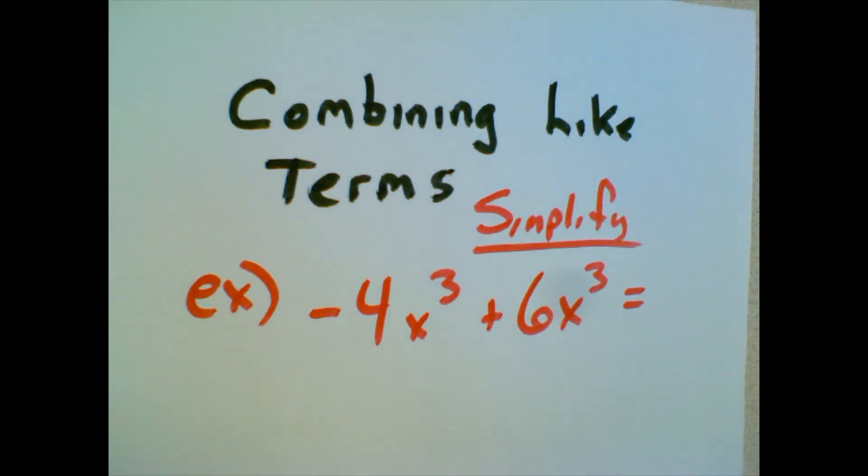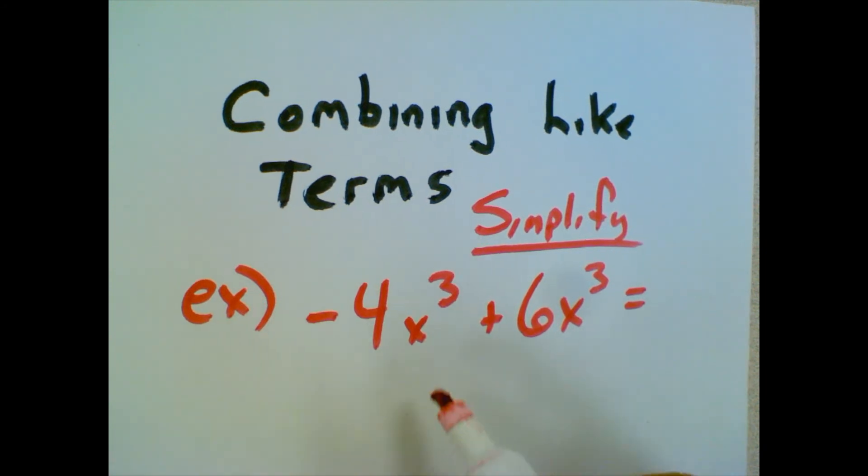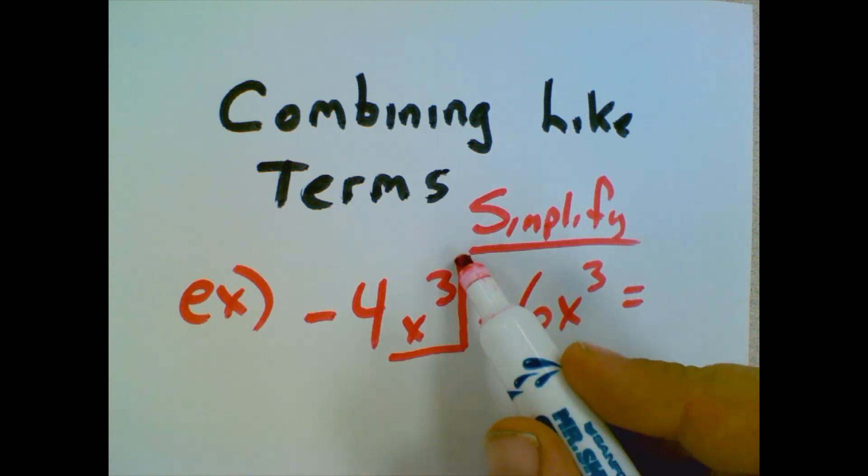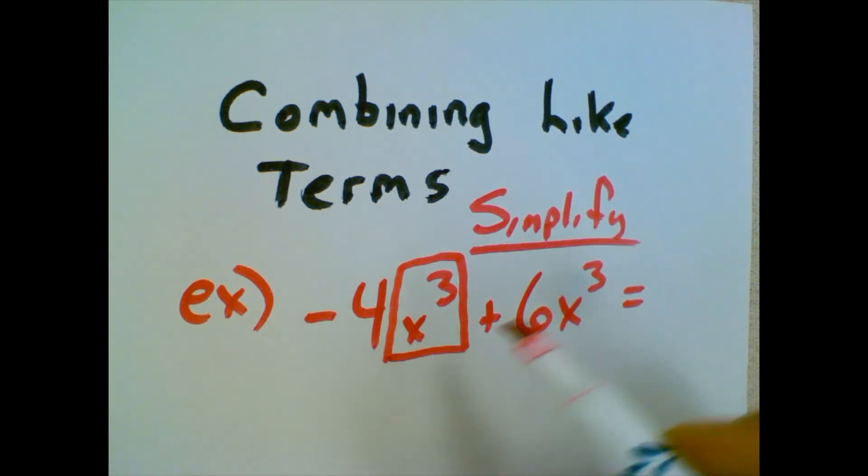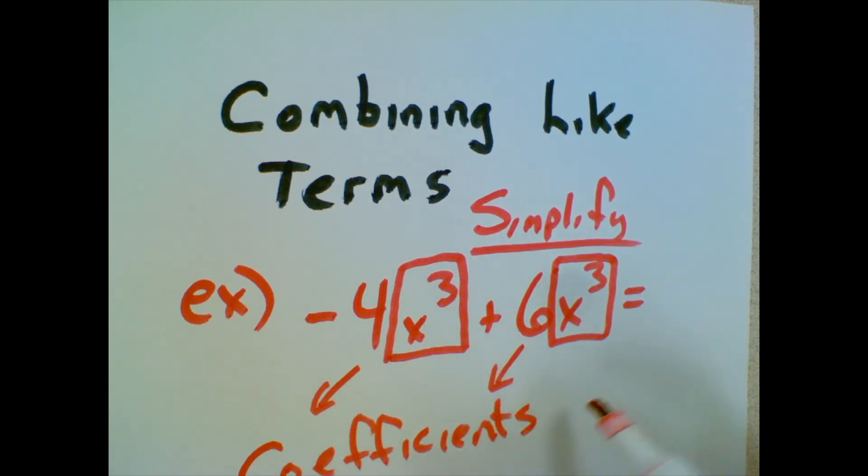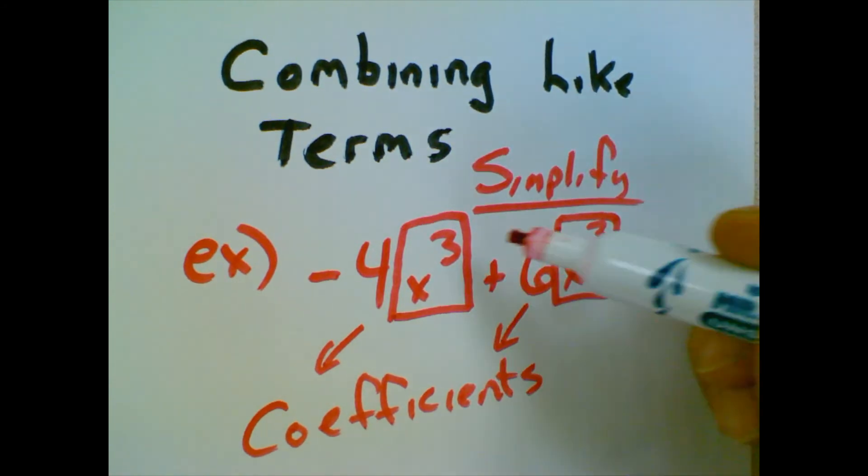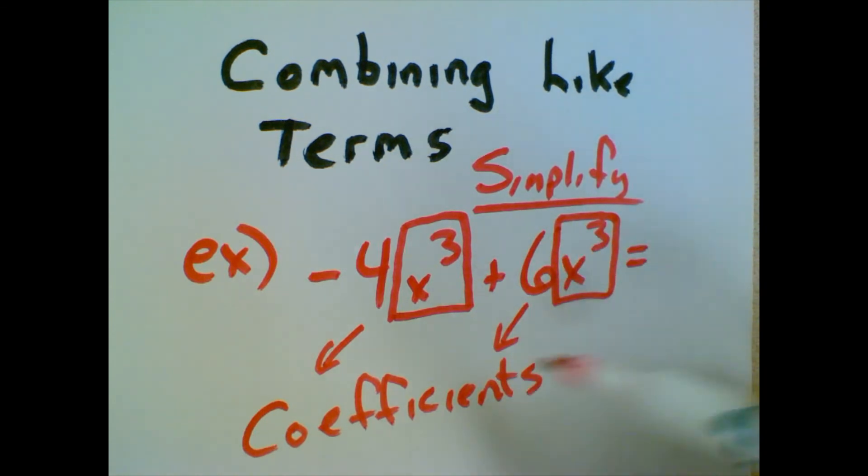Now what are the rules to be able to combine these terms? Well, in order to combine the terms, they have to have all the factors the same as far as the variable part of it. The variable part of this first term is x cubed. The variable part of this is x cubed. The numbers in front of variables are called coefficients. The negative 4 and the 6 are called coefficients. So in order to combine like terms, whatever the things that I put a box around, if they're the same things, and everything's got to be the same, then we can combine the terms.